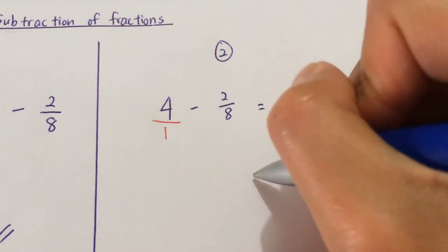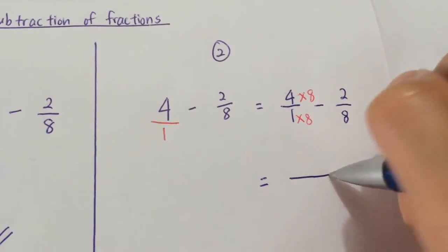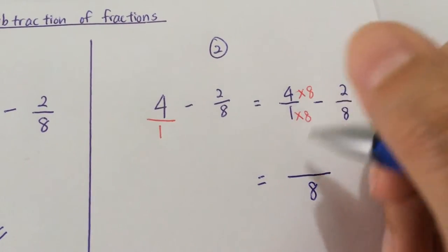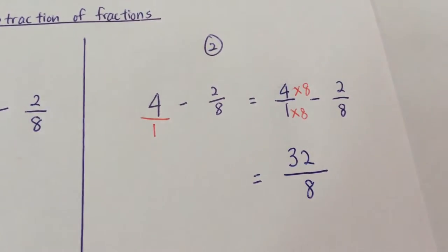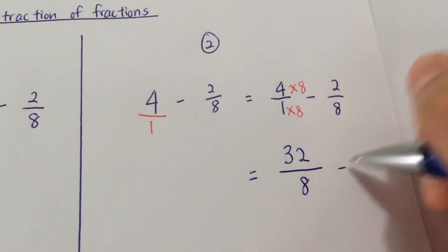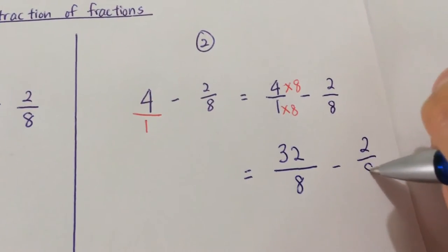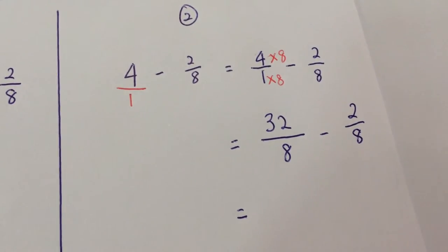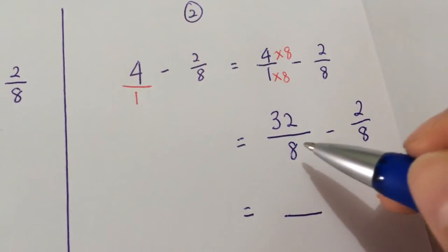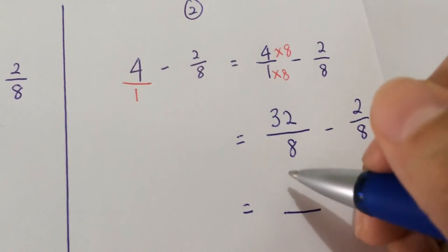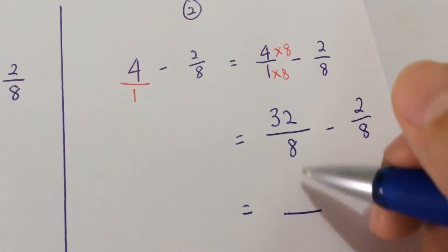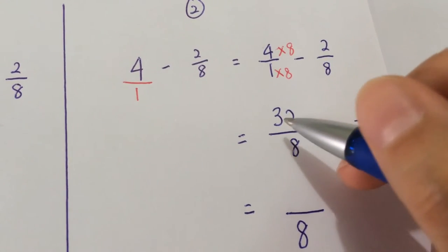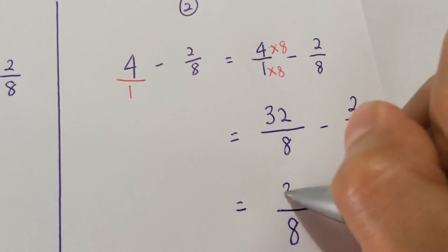I'm going to rewrite it. 1 times 8 is 8. 4 times 8 is 32. 2 out of 8 will still be 2 out of 8. The denominators are now the same. I can subtract to get my answer. Denominator remains as 8. 32 minus 2 is 30.